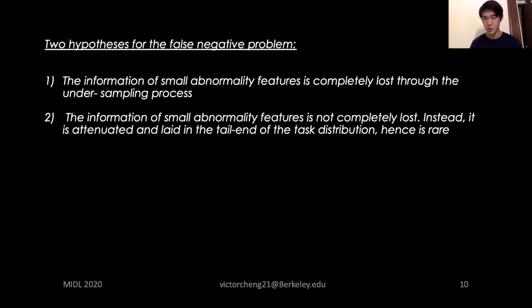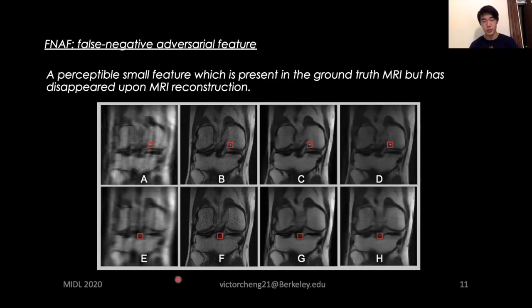In an attempt to better explain this phenomenon, we investigate two hypotheses. The information of the small abnormality feature is completely lost through the undersampling process. In the second hypothesis, the information of the features is not completely lost. So to apply this robustness perspective to the problem, we can actually see the small abnormalities that are missed by the reconstruction method as edge cases.